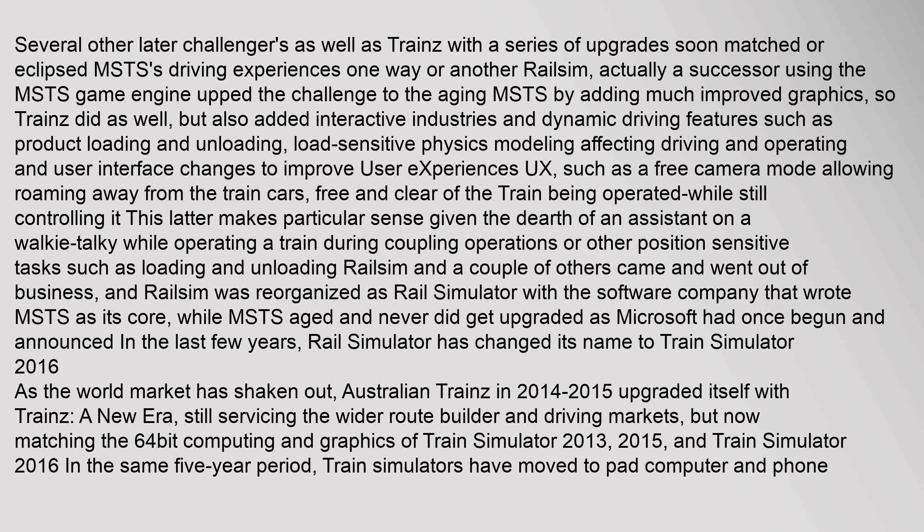Rail Sim and a couple of others came and went out of business, and Rail Sim was reorganized as Rail Simulator with the software company that wrote MSTS as its core. While MSTS aged and never got upgraded, in the last few years Rail Simulator changed its name to Train Simulator 2016. As the world market has shaken out, Australian Trainz in 2014–2015 upgraded itself, still servicing the wider route builder and driving markets, now matching the 64-bit computing and graphics of Train Simulator 2013, 2015, and Train Simulator 2016. In the same five-year period, train simulators have also moved to tablet computer and phone platforms.